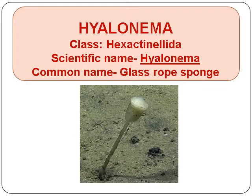Hyalonema. Class Hexactinellida. Scientific Name: Hyalonema. Common Name: Glass Rope Sponge.